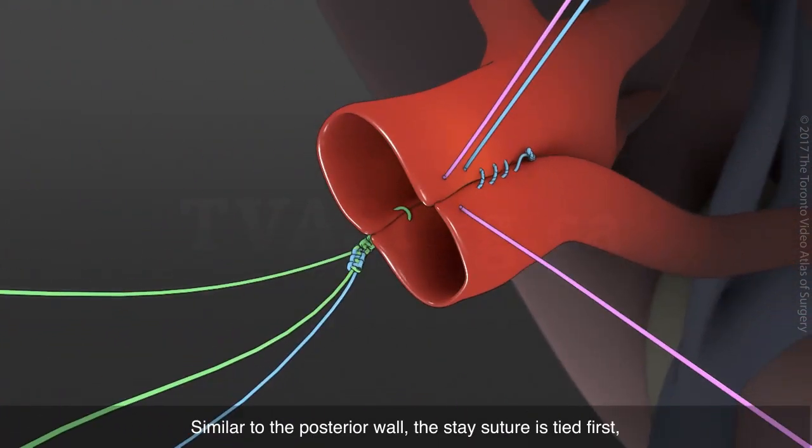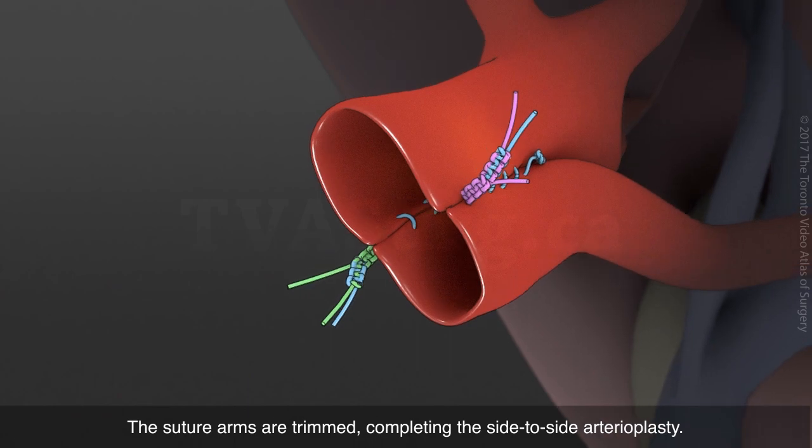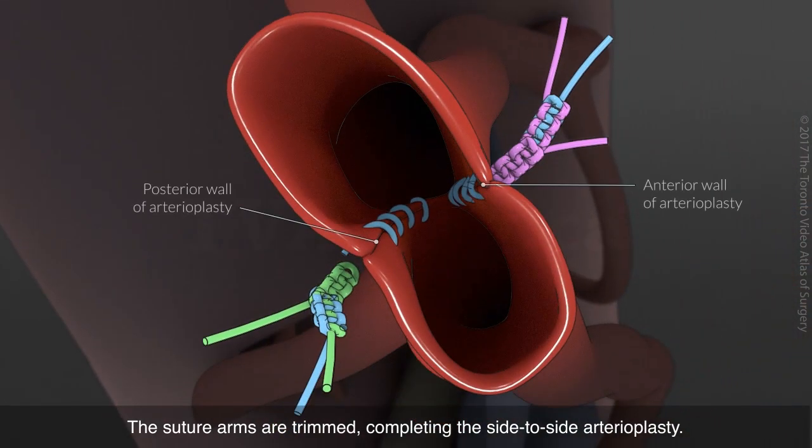Similar to the posterior wall, the stay suture is tied first, followed by the continuous suture arm. The suture arms are trimmed, completing the side-to-side arterioplasty.